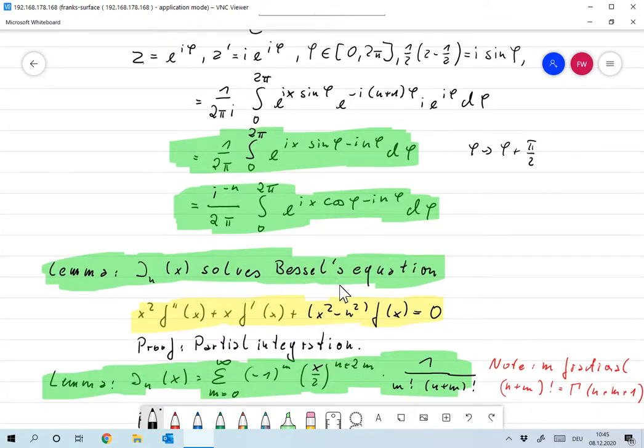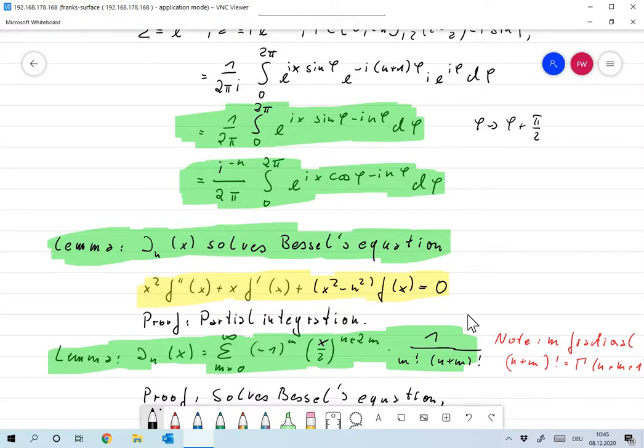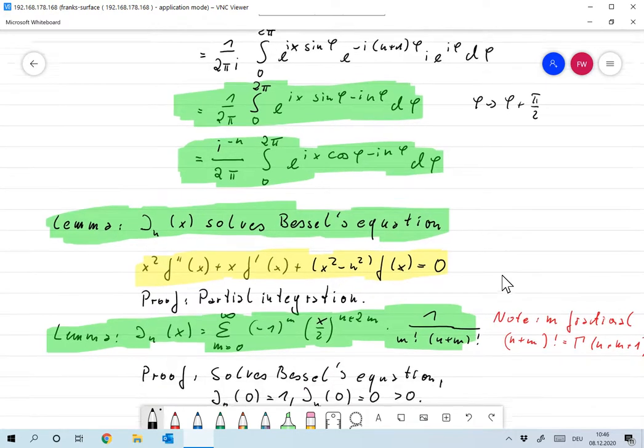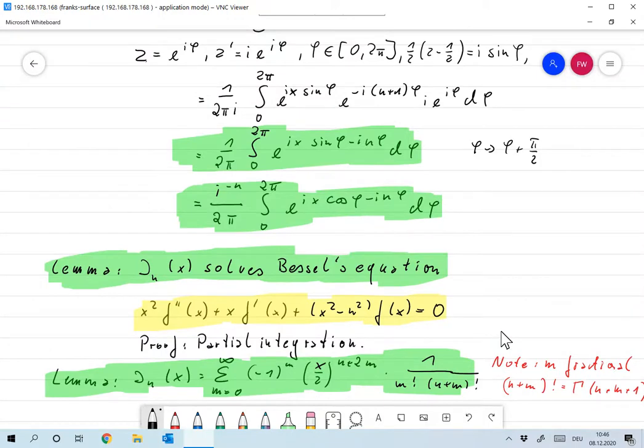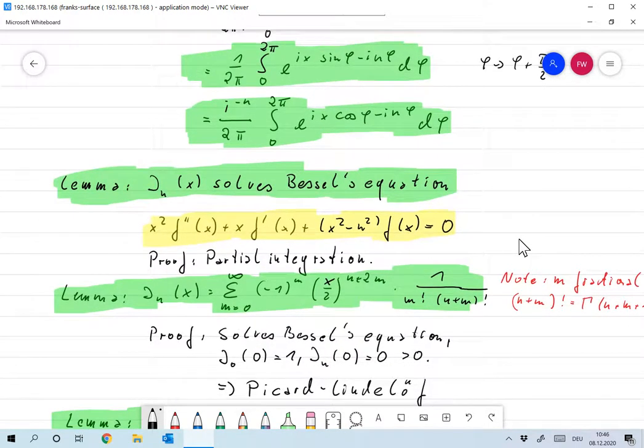Now j_n is interesting in ordinary differential equations because it solves Bessel's differential equation. Bessel's differential equation is x²y'' + xy' + (x² - n²)y = 0. I tried to do it, I always got the constants wrong. So the trick is you take this one over here, do partial integration, and then what comes up is the same as f' and f''. It's just a lot of computation and you find that this is true. I think there's a way of directly doing that with a generating function, but I didn't find out how.